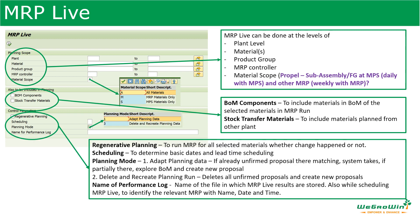There is also an option for regenerative planning, which means the entire planning is done for the total plant. Scheduling can be done based on basic data or lead time scheduling. Planning mode options are: adapt planning data as-is or delete and recreate planning data. Note that some options are removed from these selection parameters considering the speed at which the system works and the available data, so don't expect the exact same selection parameters as classic MRP — one or two things will not be present here.